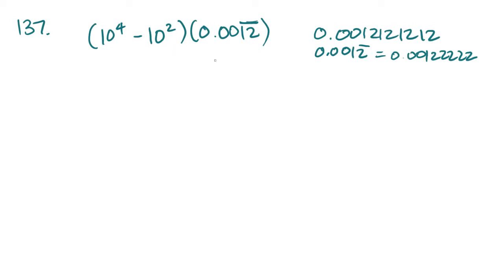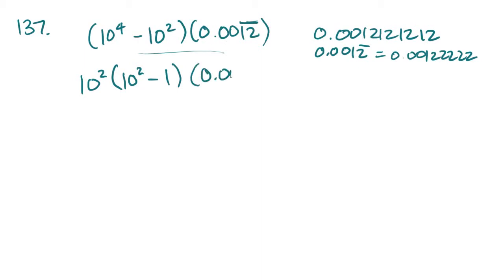For problem 137, they give you an equation and ask you to find the value. First I factored out 10 squared to get 10 squared minus 1, and then 0.0012. I just ignored the repeating bar because the number is so small that it doesn't actually matter if it repeats or not.